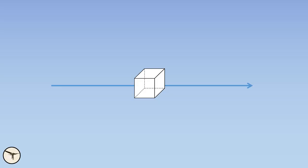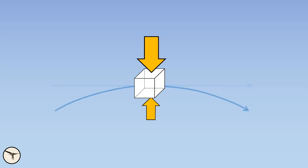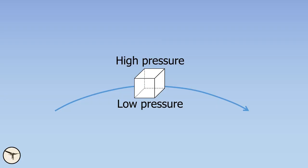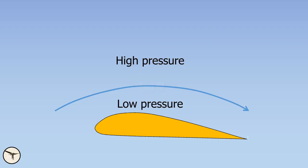Now, let's see what happens when the pressure difference is acting perpendicular to the airflow. For example, when the pressure on top of the cube is higher than the pressure below, the cube will accelerate downwards. This is called centripetal force, and the airflow will follow a curved path. This means when the airflow follows a curved path, the air pressure will decrease towards the center of the curvature. And this is lift.